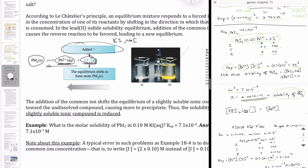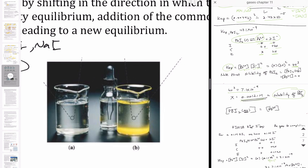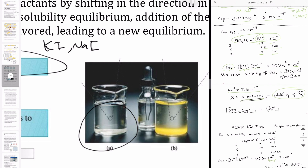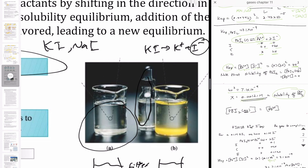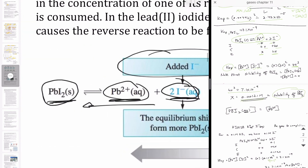We're going to show this with a calculation, but first let me show you an actual experimental observation. This is a solution of saturated lead iodide — dissolved as much as possible in water, with the precipitate filtered out. When potassium iodide solution is added, which dissociates completely to produce iodide ions, you immediately start seeing precipitate form. That shows that adding iodide means less of the original lead iodide salt can stay dissolved, so it switches back to form the precipitate.